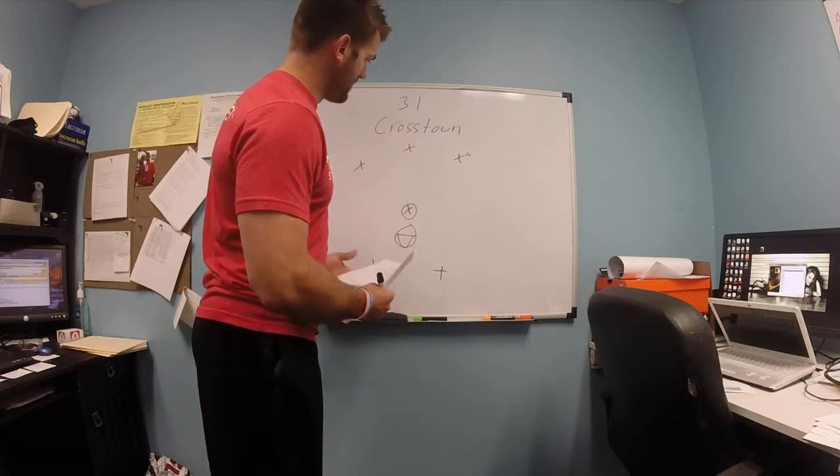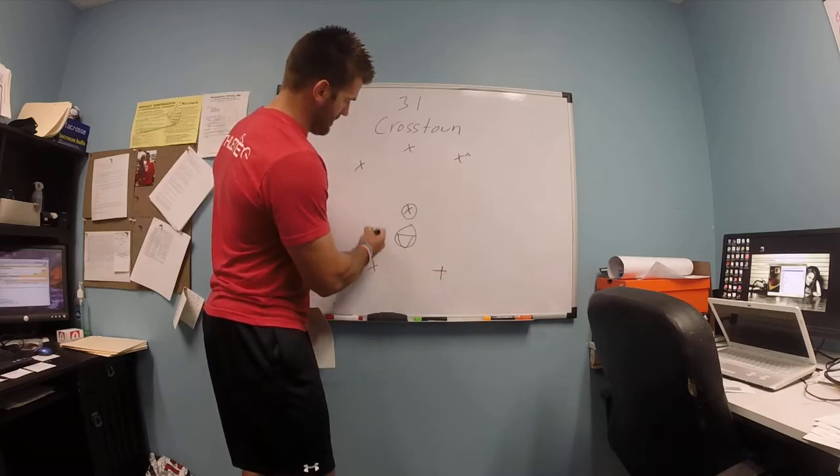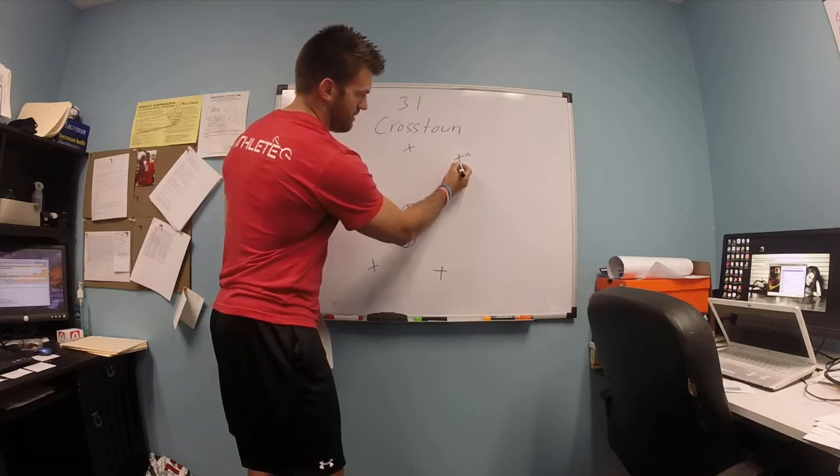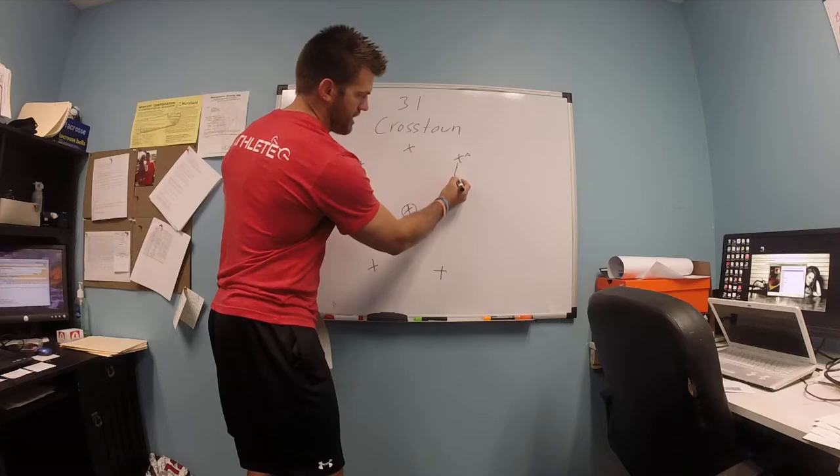31 Crosstown starts off with the ball spinning either way. The ball is spinning this way, let's say clockwise going around. This player will catch the ball, dodge here, set the dummy dodge up and roll back.